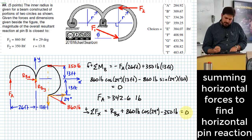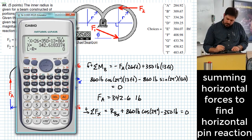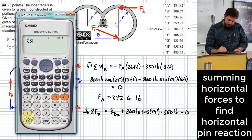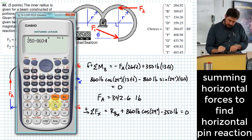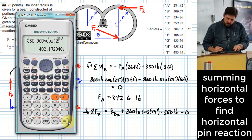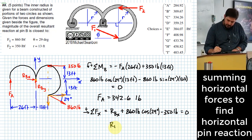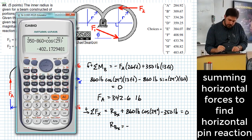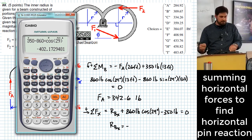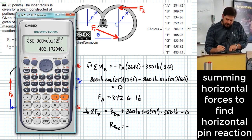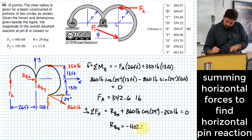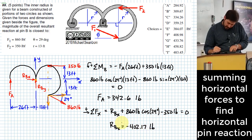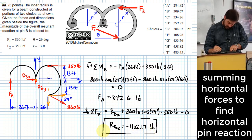So what that allows us to do is find RBX. RBX will just be equal to 350 minus 860 times the cosine of 29. What does the negative value mean here? It means that the direction that I assumed is the wrong direction. So 402.17. Is it a problem that I chose or I assumed the wrong direction at the beginning?